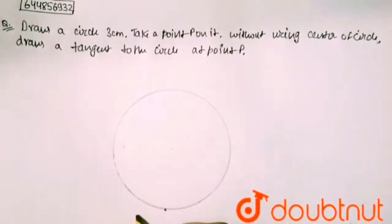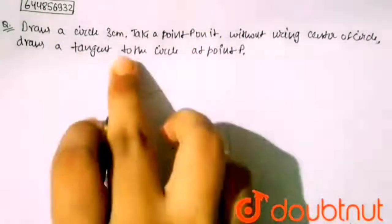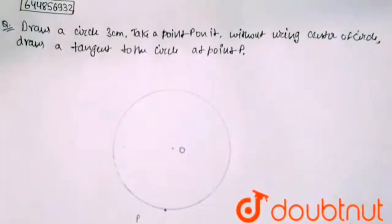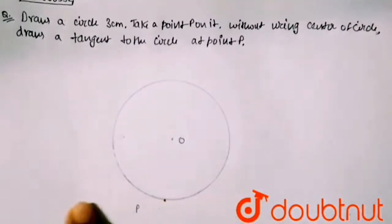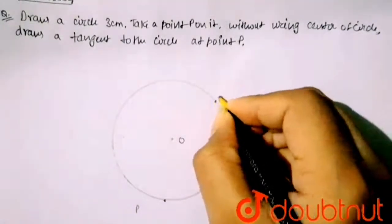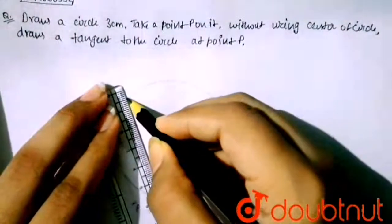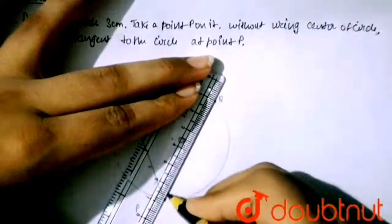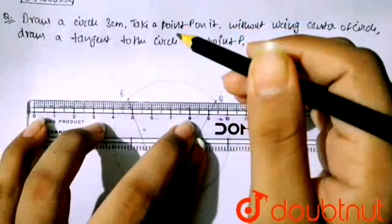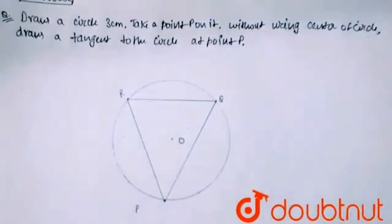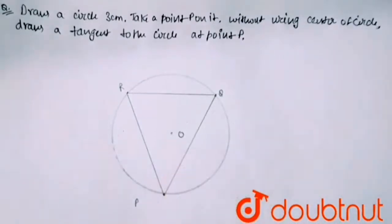I am taking my point P here, and this is my point O. You can take point P anywhere on the circle. Now the tangent will be like this — horizontally. I am drawing a chord here, taking a point Q and a point R, and joining them with P. So PQ and PR are chords, and RQ is also a chord.